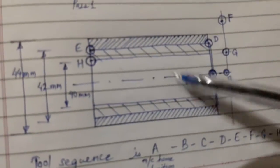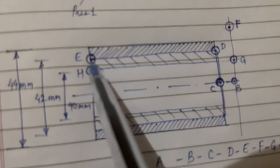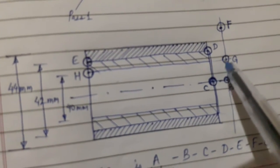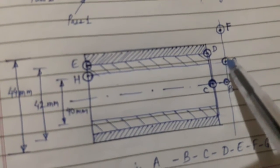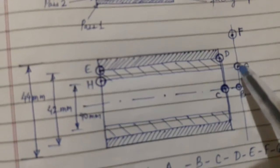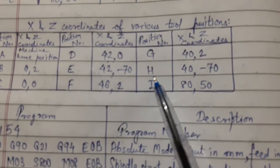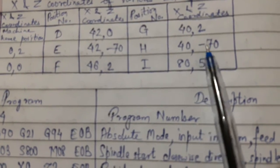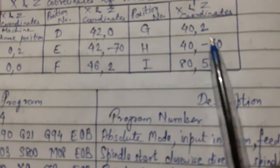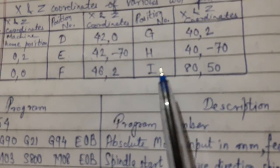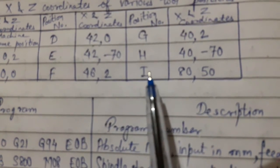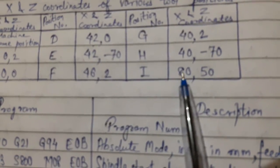After the first pass, the tool reaches E and then moves to position F. It then comes back to position G, where the X coordinate is 40 and Z is 2 mm — 2 mm away from the face for the second pass. From G it moves to H with Z equal to minus 70, removing material along the full length. Once complete, the tool goes to position I, very far from the job at coordinates X 80, Z 50, to allow safe removal of the finished part.